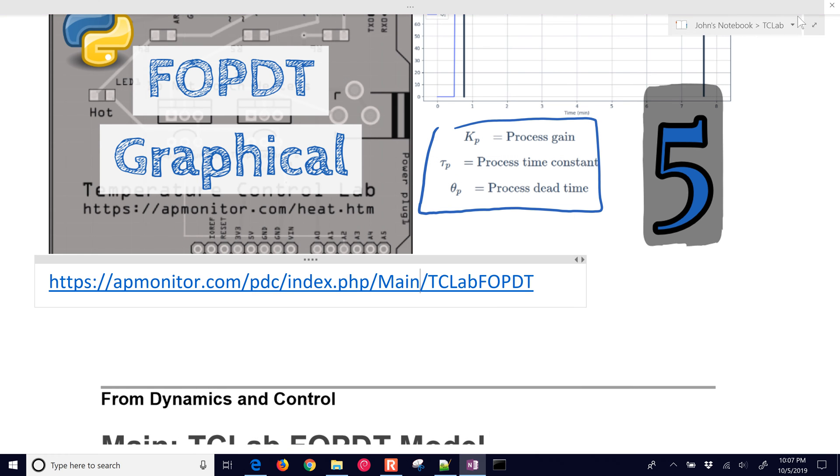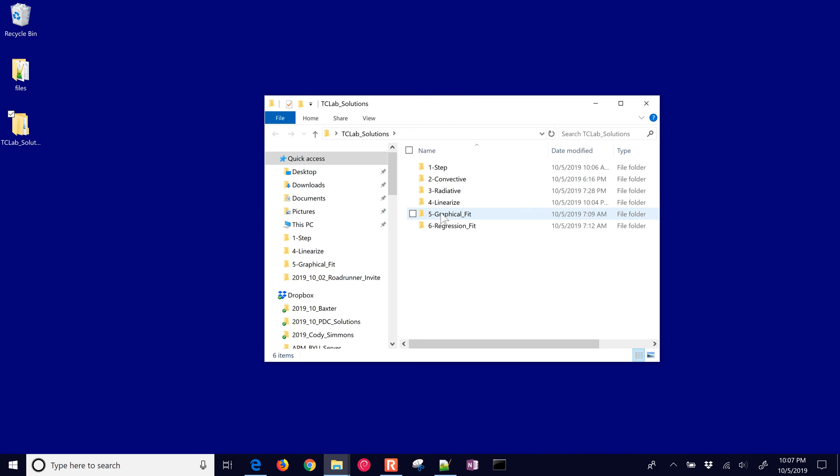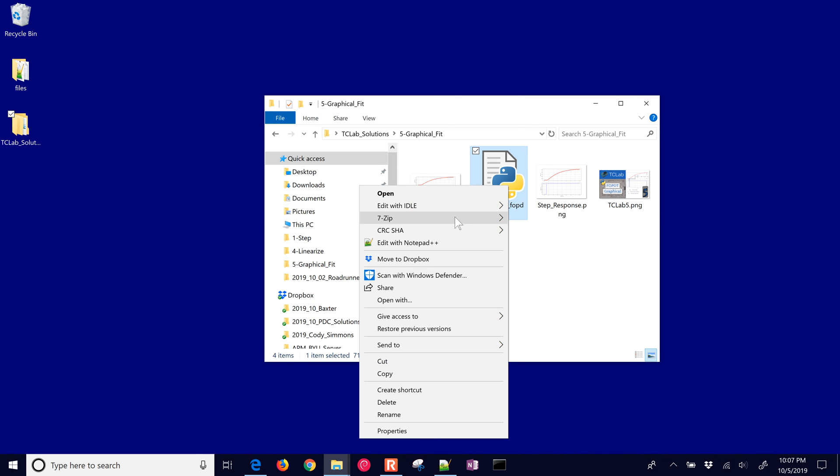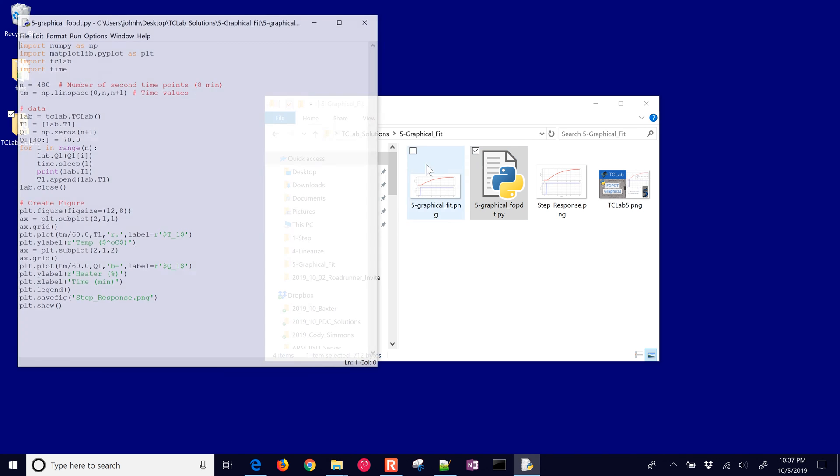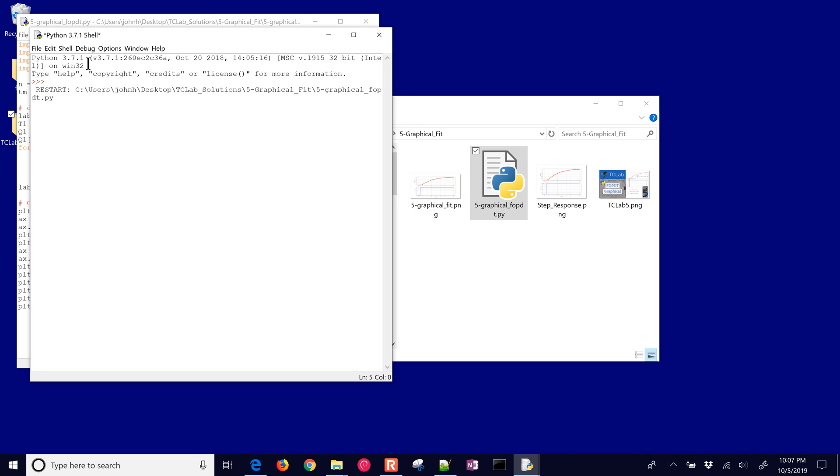So just copying that in and then running it, you'll be able to get a plot of the step response of this Arduino device. So you can just take this and run it, and I'll just go ahead and start this. We'll get a slightly different response than when I ran it before.